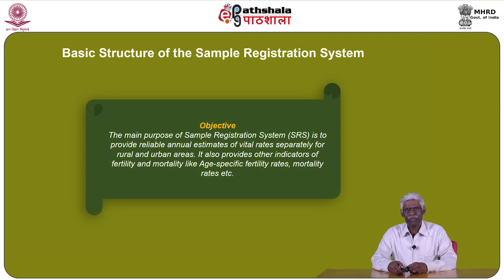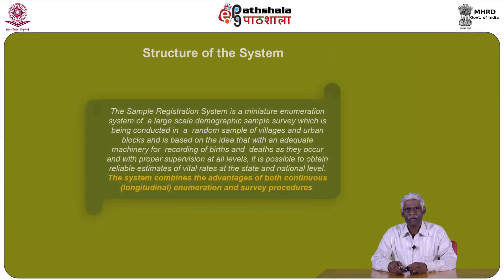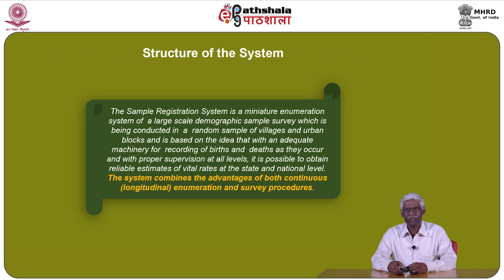Let us discuss the basic structure of the Sample Registration System. The major purpose of the SRS is to provide reliable annual estimates of vital rates separately for rural and urban areas. It also provides other indicators of fertility and mortality like age-specific fertility rates, mortality rates, etc. The SRS is a miniature enumeration system of a large-scale demographic sample survey, conducted in a random sample of villages and urban blocks. It is based on the idea that with adequate machinery for recording births and deaths, and proper supervision at all levels, reliable estimates of vital rates can be obtained.